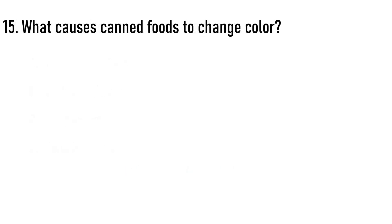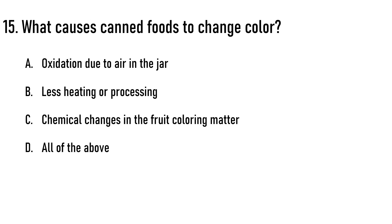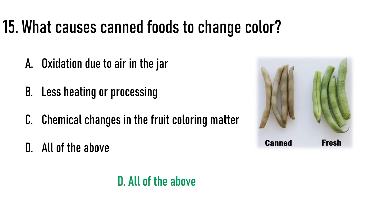Next question: What causes canned foods to change color? Options are: A) oxidation due to air in the jar, B) less heating or processing, C) chemical changes in the fruit coloring matter, D) all of the above. The correct answer is option D, all of the above.